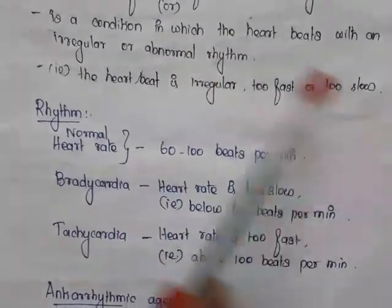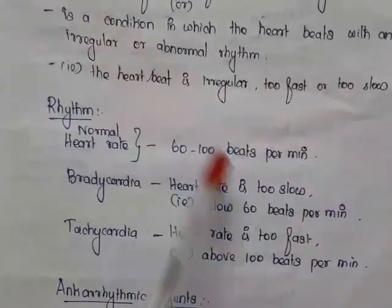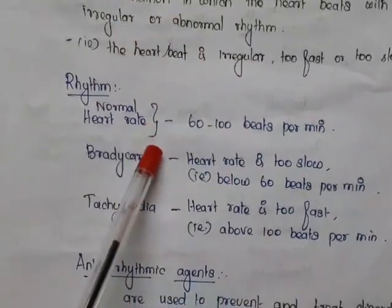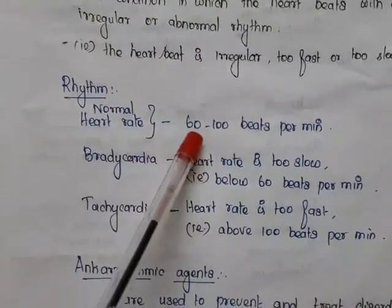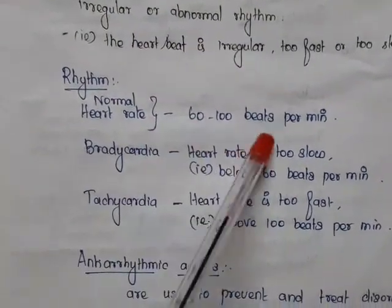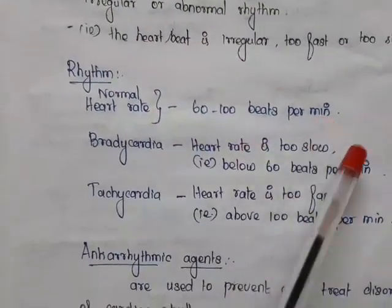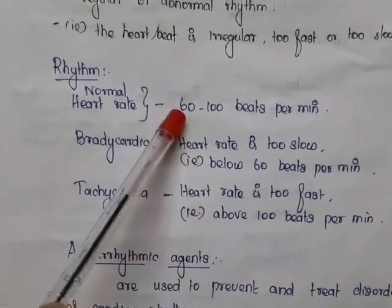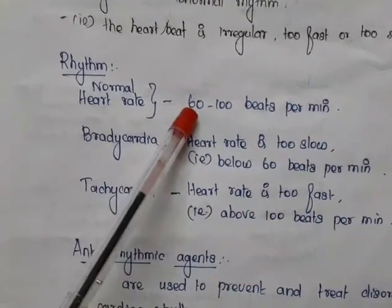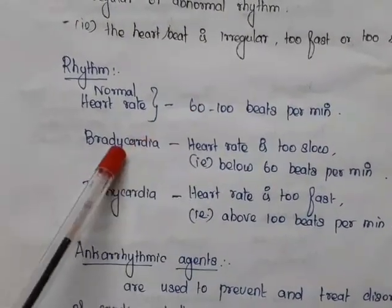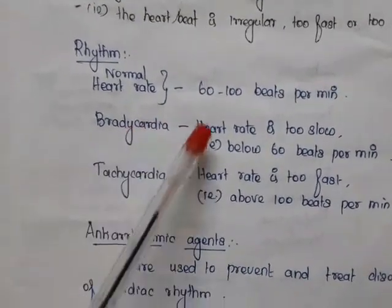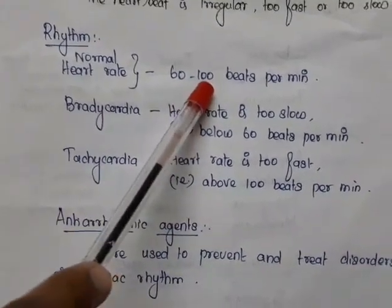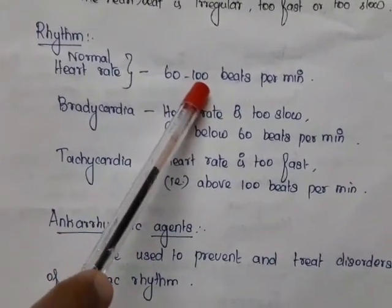The normal heart rate is between 60 to 100 beats per minute. If it is very slow, that is below 60 beats per minute, it is called bradycardia. If it is too fast, that is above 100 beats per minute, it is called tachycardia.